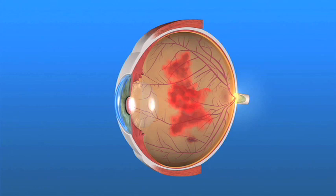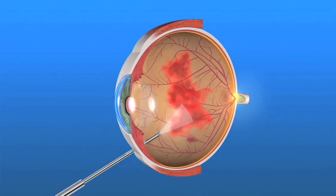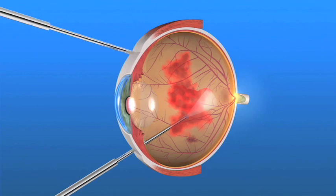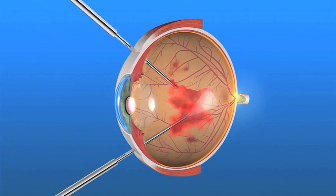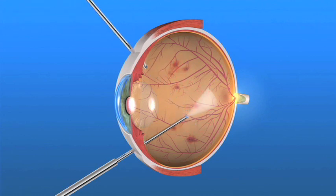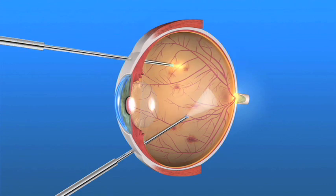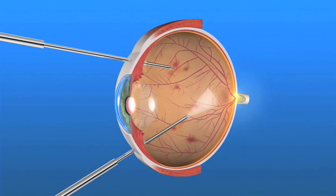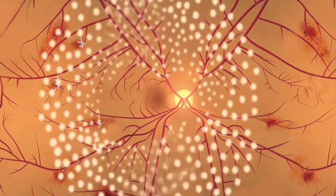Vitrectomy surgery is usually performed in the operating room on an outpatient basis. An operating microscope and small surgical instruments are used to enter the inside of the eye. Blood and scar tissue are removed. At the same time, a laser may be used to prevent further bleeding and abnormal blood vessel growth.